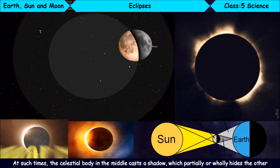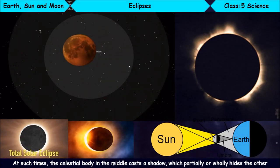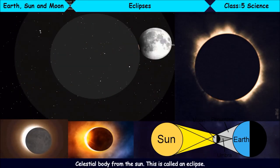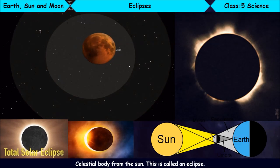At such times, the celestial body in the middle casts a shadow which partially or wholly hides the other celestial body from the Sun. This is called an Eclipse.